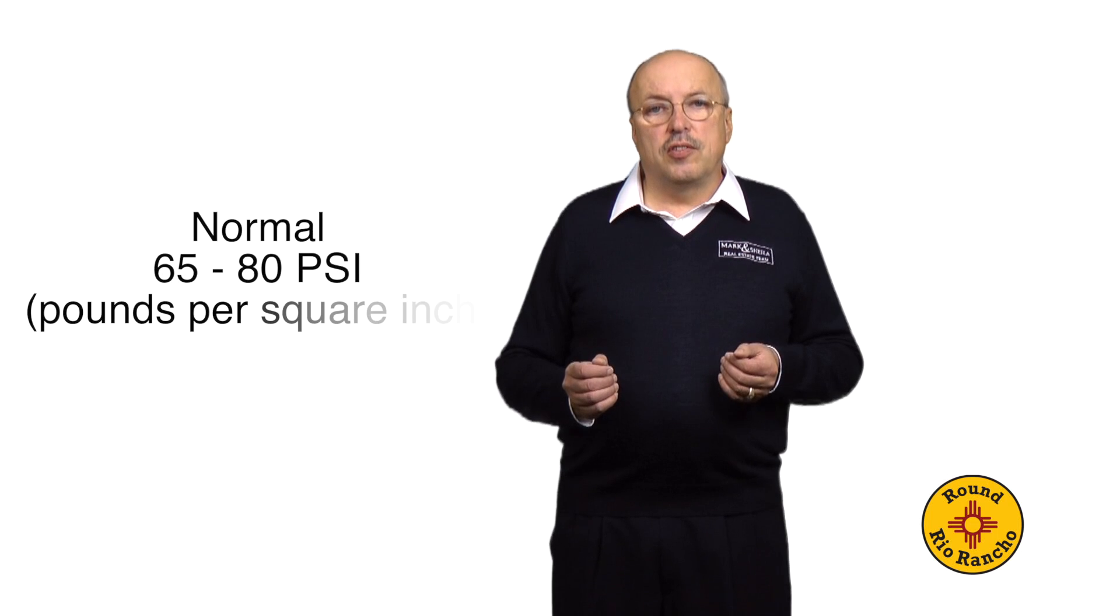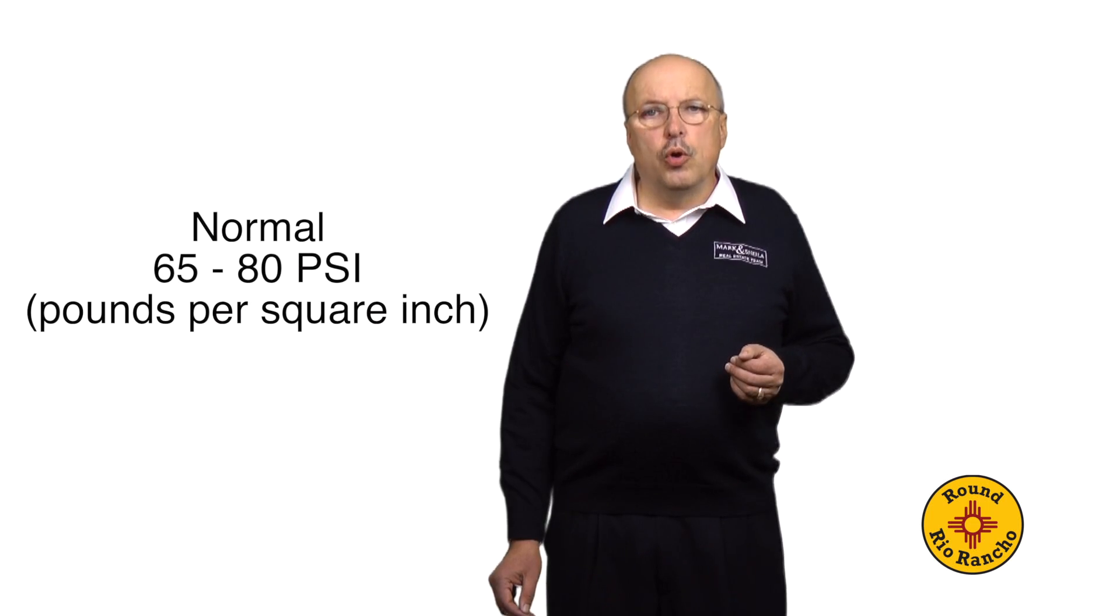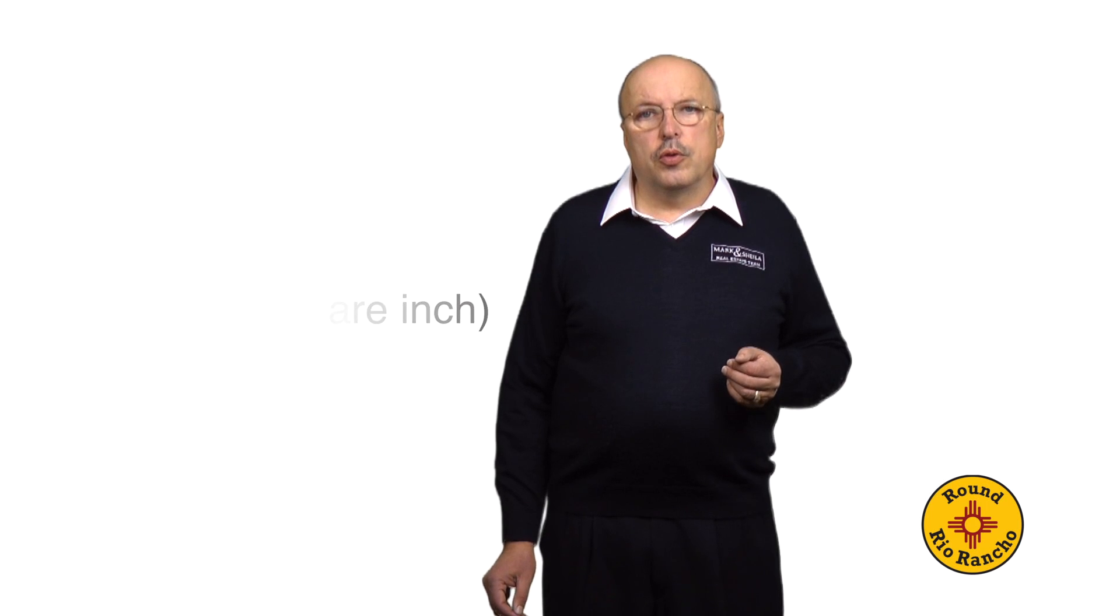Normal water pressure for a home is between 65 and 80 psi. According to Mr. Webb, City Ordinance authorizes the utility to supply water at between 30 and 125 psi. We have personally seen homes in town where the water pressure was at 125 psi, but never higher.